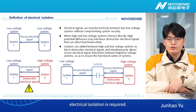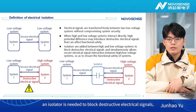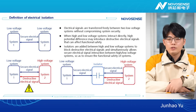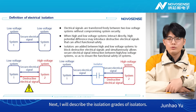In this case, electrical isolation is required. To implement electrical isolation between high- and low-voltage systems, an isolator is needed to block destructive electrical signals while allowing safe electrical signals to interact between the systems, thereby ensuring functional safety. How can we choose an isolator that well answers our requirements? I will now describe the isolation grades of isolators.